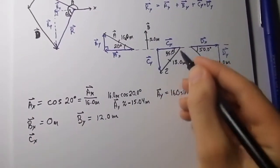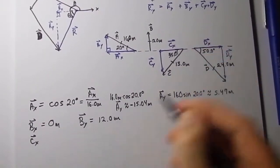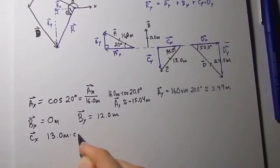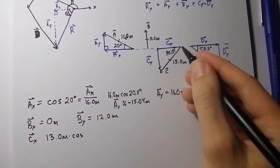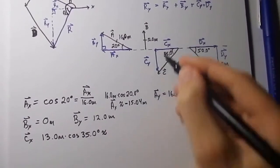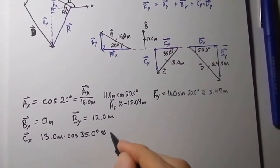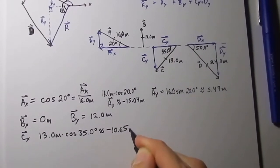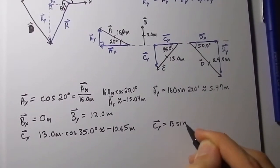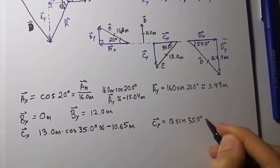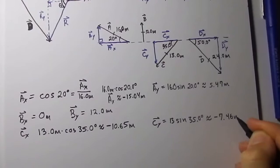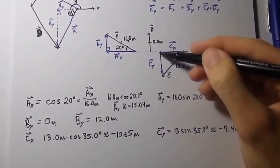So the x-component of vector C is adjacent to the angle. So you could just use the cosine. So you're going to use 13.0 meters, I guess you don't have to write the meters, you'll already know that you're working with meters, cosine 35.0 degrees, which is approximately, now notice it's going in the negative direction, so it's negative 10.65 meters. And the y-component of vector C is going to be 13 sine 35.0 degrees, which I have calculated to be 7.46 meters on the calculator. Notice it's negative.